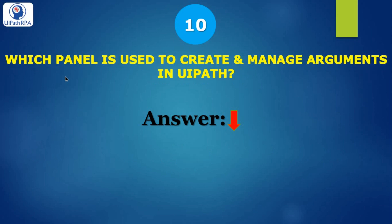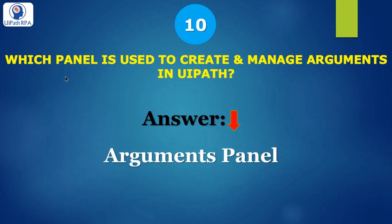Which panel is used to create and manage arguments in UiPath? The answer is the Arguments panel. You have seen there are two panels in UiPath Studio at the bottom: one is the Variables panel and the second is the Arguments panel. From the Arguments panel you can create or manage arguments in UiPath.